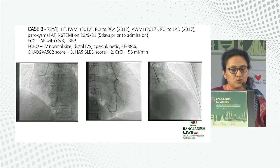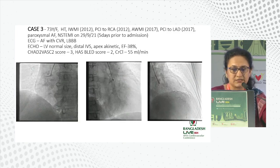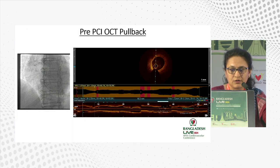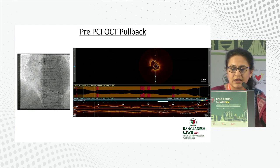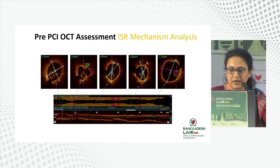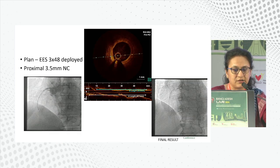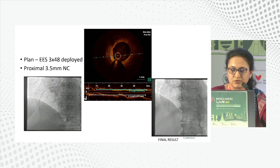A second ISR case where high-pressure cutting balloon was not the right choice: this was an RCA ISR. OCT showed classical TCFAs at the distal edge, high lipidic plaque, rupture, and no significant neointimal hyperplasia or fibrotic lesion — predominantly new atherosclerosis. So we did not use high-pressure balloons or cutting balloons. We simply placed a long stent covering the segment, and this was the post-procedure result.